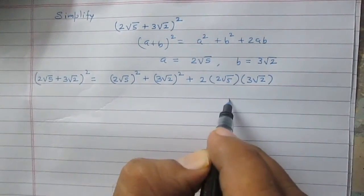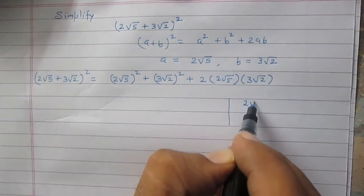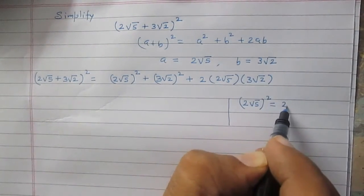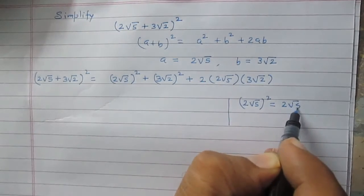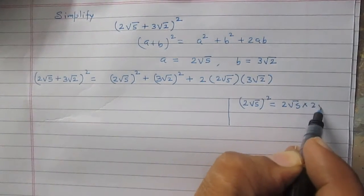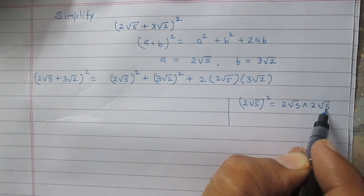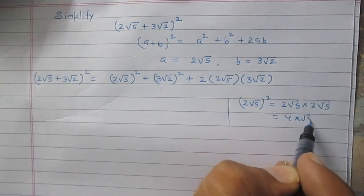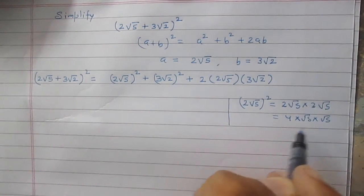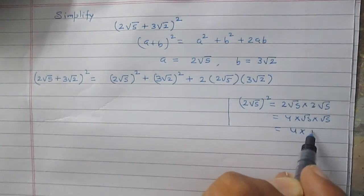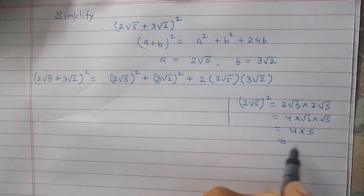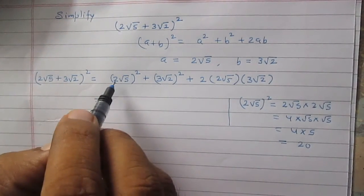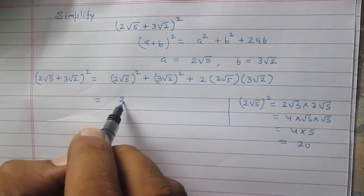Now (2√5)² equals 2√5 multiplied by 2√5. That gives 2 times 2 is 4, and √5 times √5 is 5, so 4 multiplied by 5 equals 20. So (2√5)² equals 20.